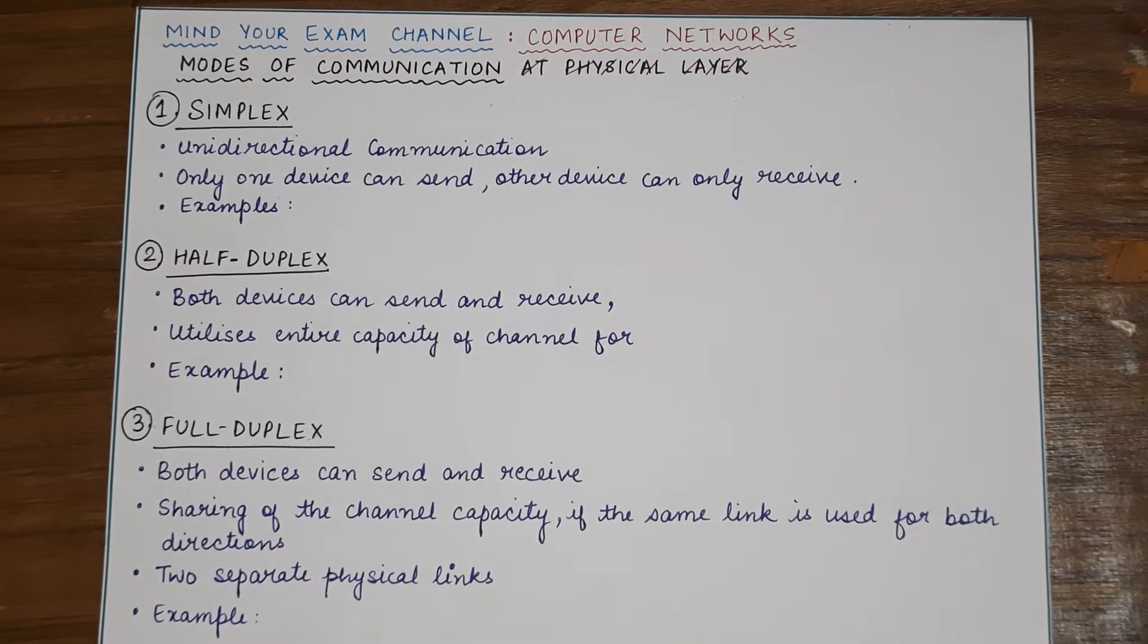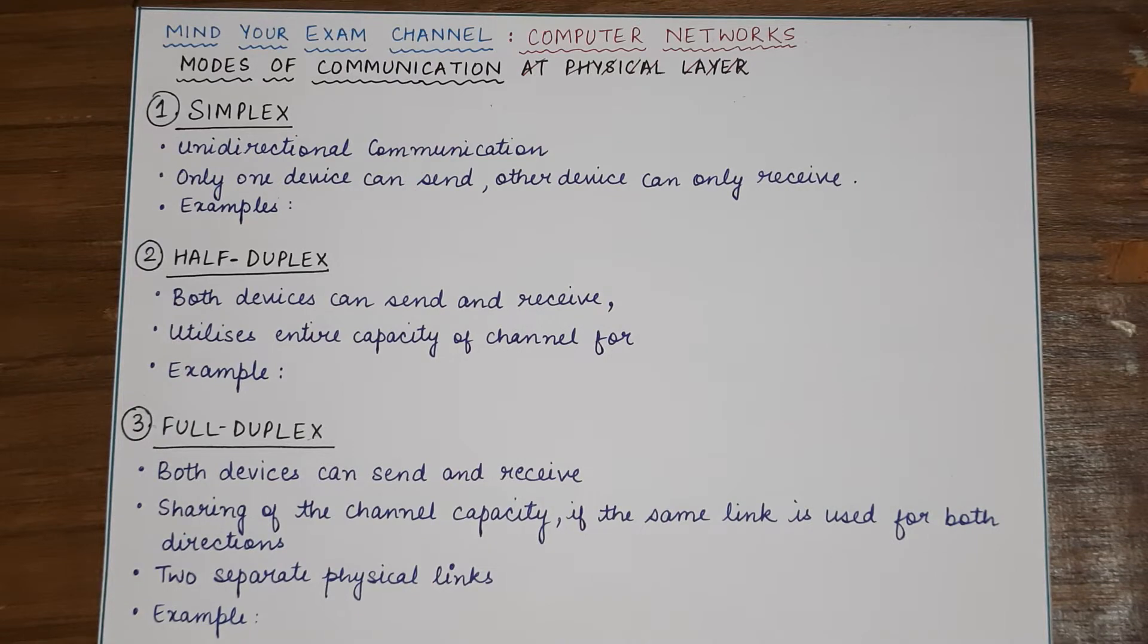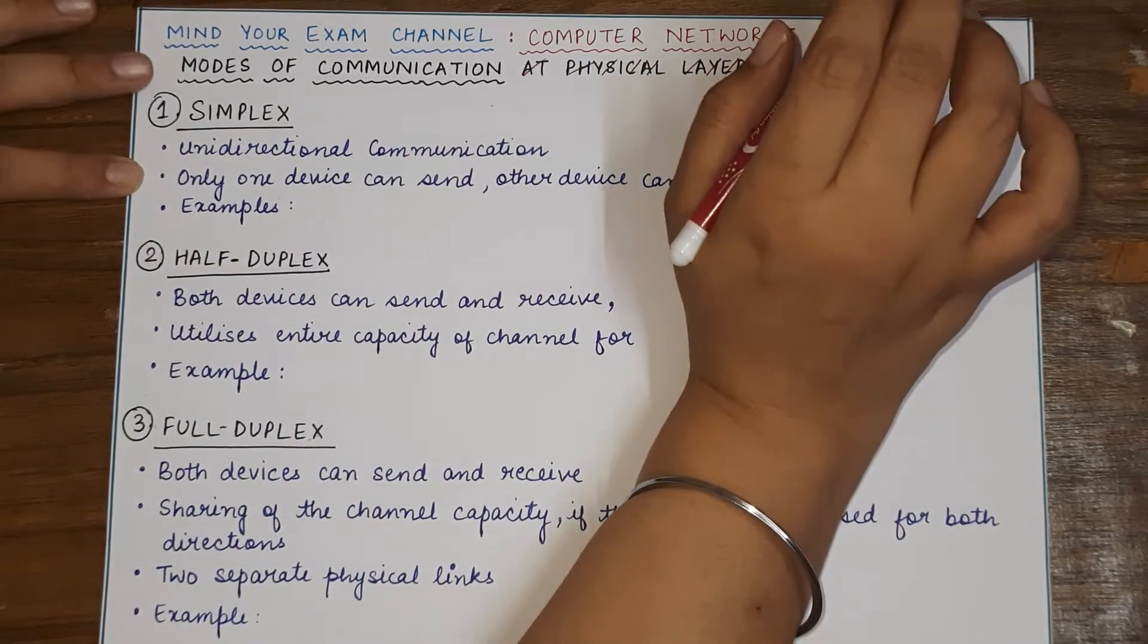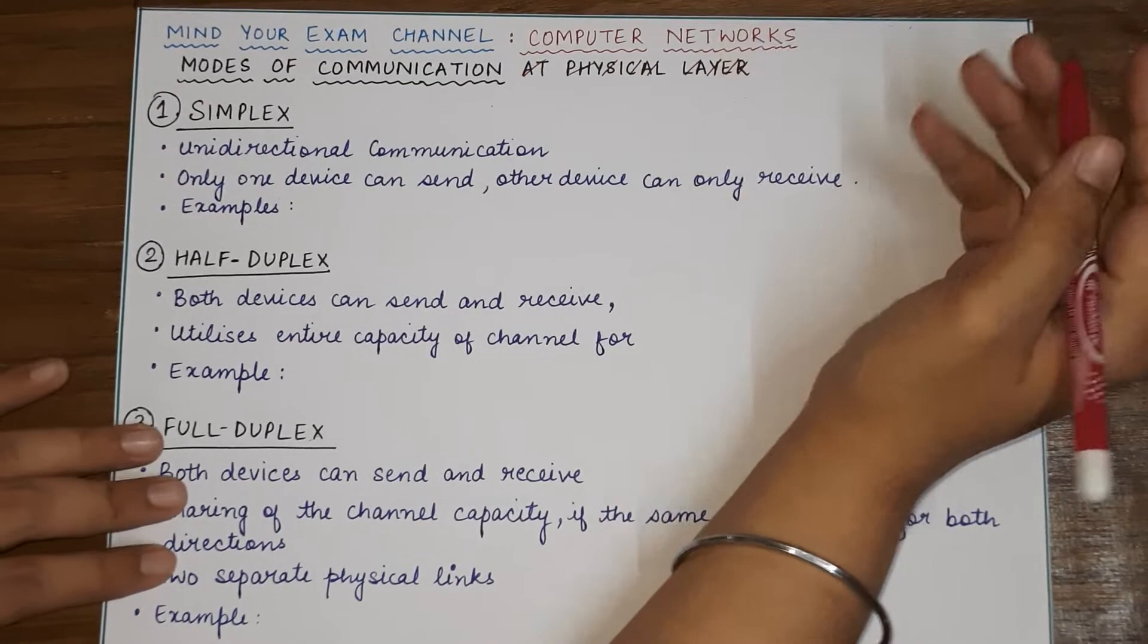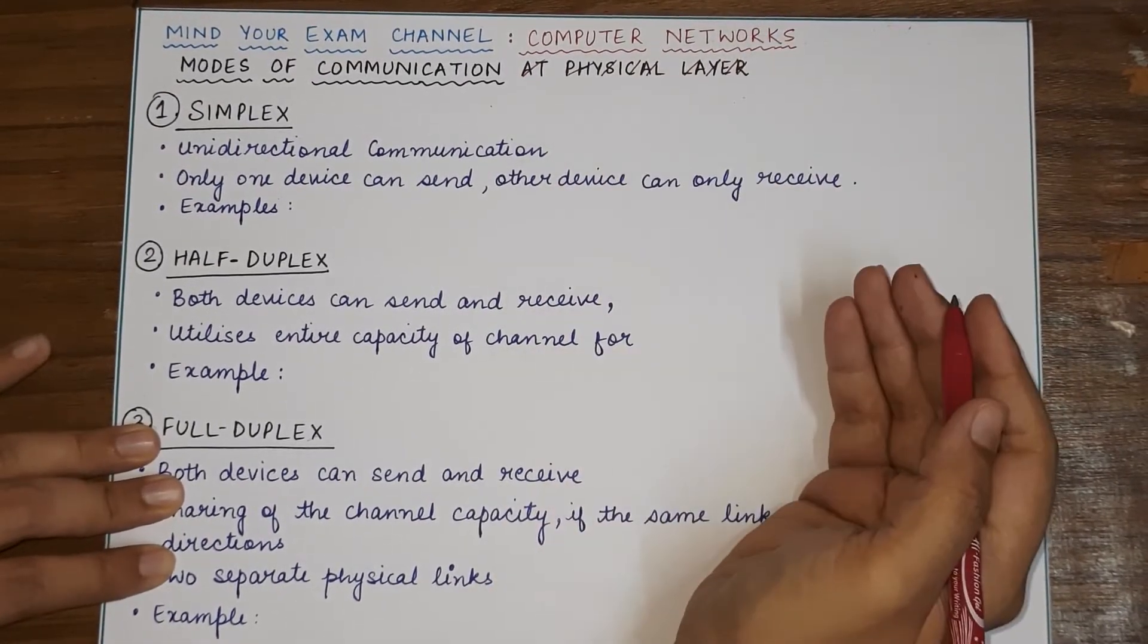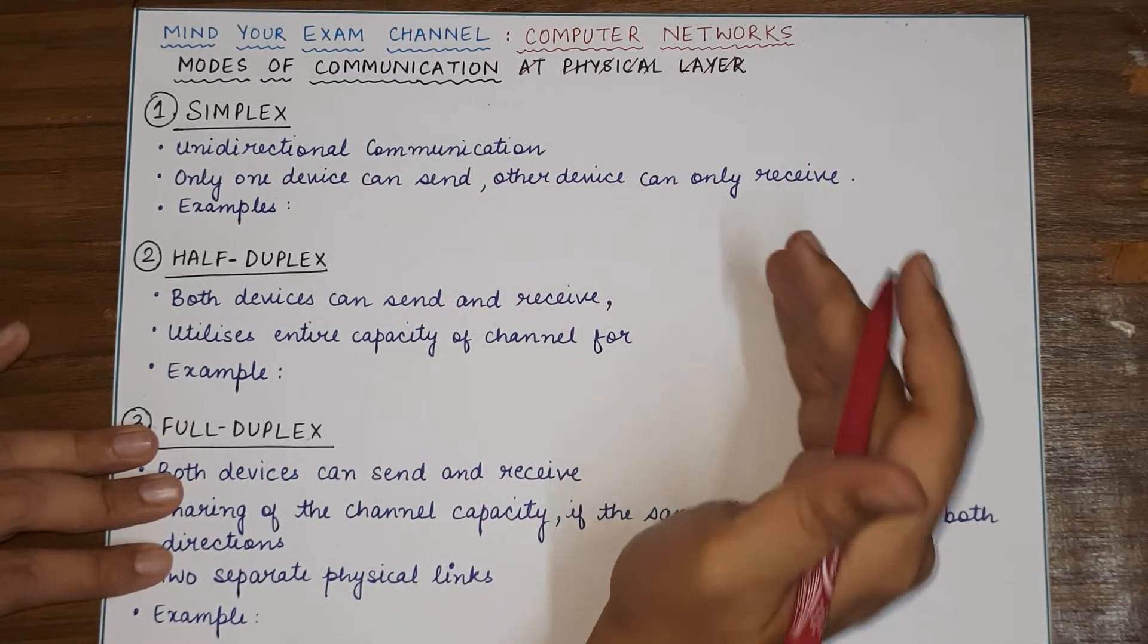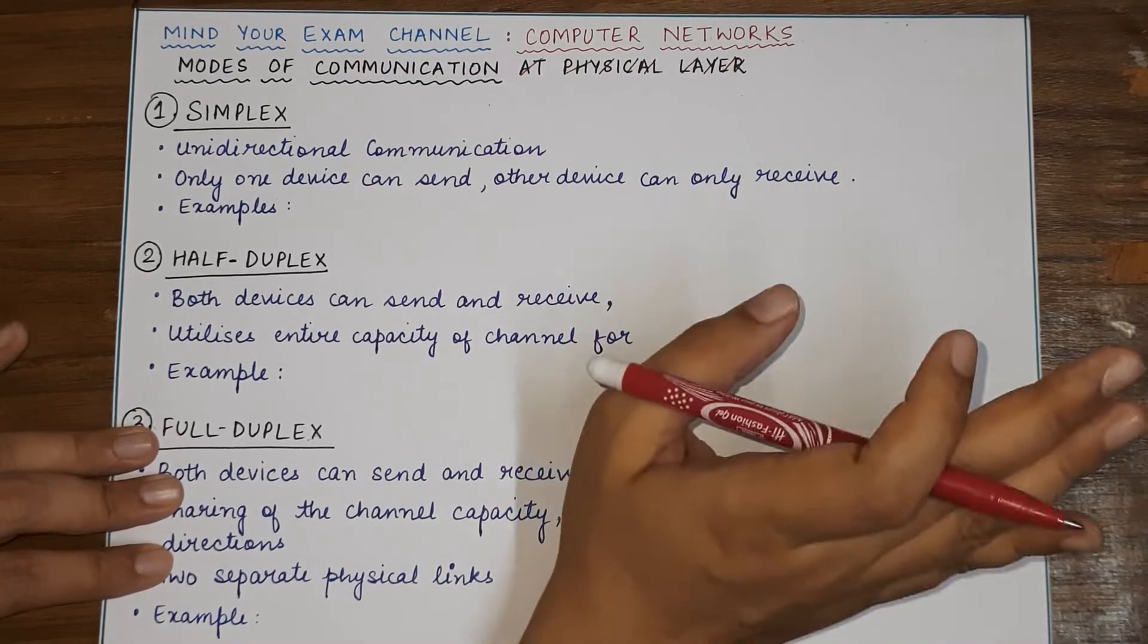Now, in the previous videos when we studied about the reference models, I told you that basically during any communication, there are five major components that are involved. First component is the sender, then comes the receiver, then the message that is being transmitted, then the protocols that are being followed, and the last is the transmission link through which that communication is happening.